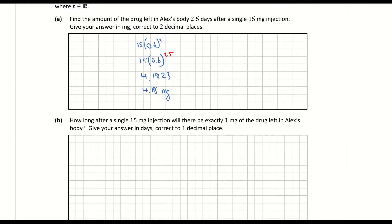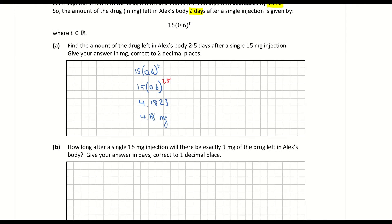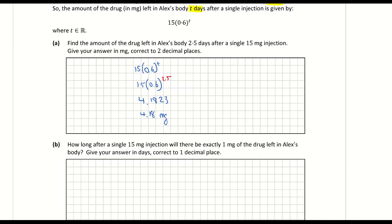Part B: How long after a single 15 milligram injection will there be exactly one milligram of the drug left in Alex's body? Give your answer to one decimal place. Taking my function 15 times 0.6 to the power of t, the question asks us to find how long — that's finding the value of t. It wants the function to equal one milligram, so I'm going to let my function equal 1 and solve.